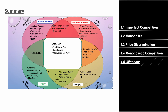Monopolies and oligopolies both have high barriers to entry. Oligopolies use game theory and collusion, with fewer than ten firms. For all market structures, MR equals MC for profit maximizing; the shutdown point is where MC equals ATC; MC looks like a Nike swoosh; ATC is V-shaped; and all firms have a motivation for profit.